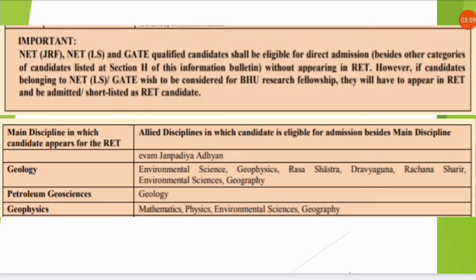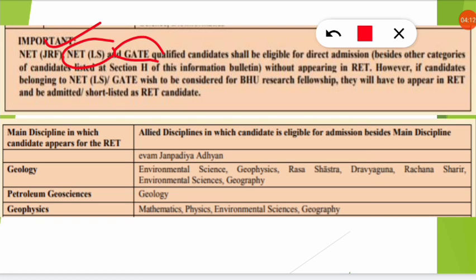There are two important things to note here. If you have NET JRF, you will receive a fellowship from UGC or CSIR. However, if you have only NET LS or GATE, you won't receive a fellowship automatically. To get the BHU Banaras Hindu University Research Fellowship, you must appear in the RET for shortlisting. So if you don't want a fellowship and are under the RET exempted category, you don't need to appear for RET — but if you want the fellowship, you should give the RET exam.